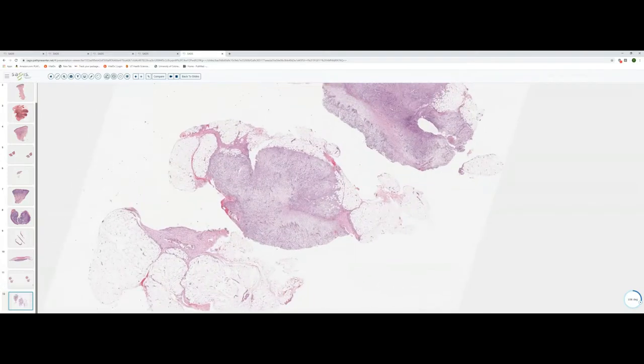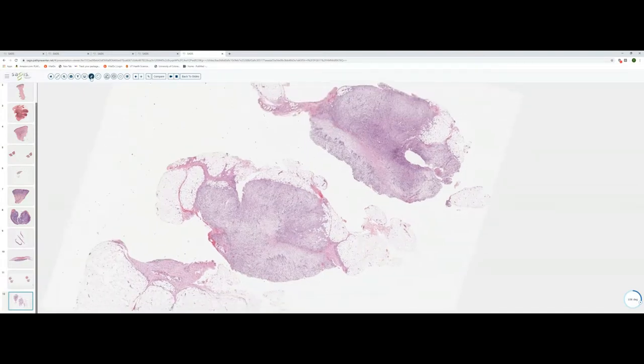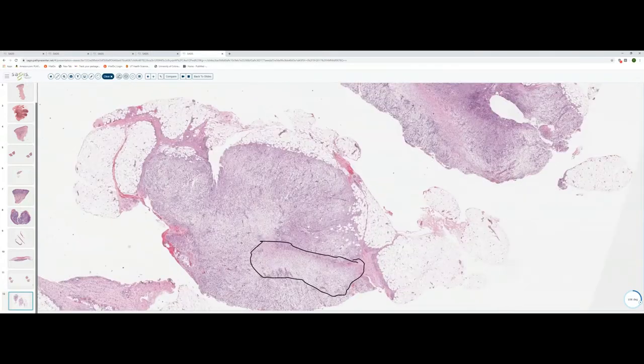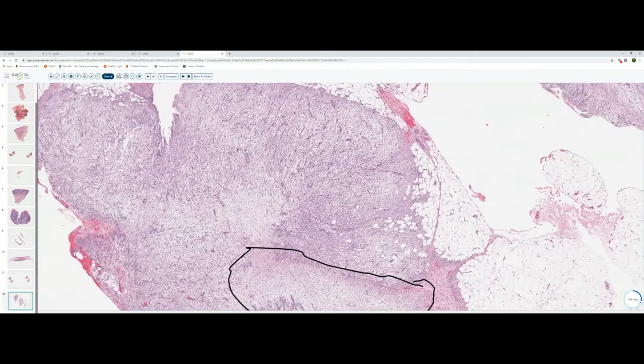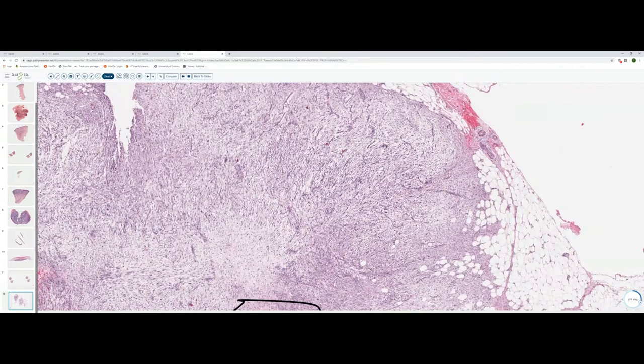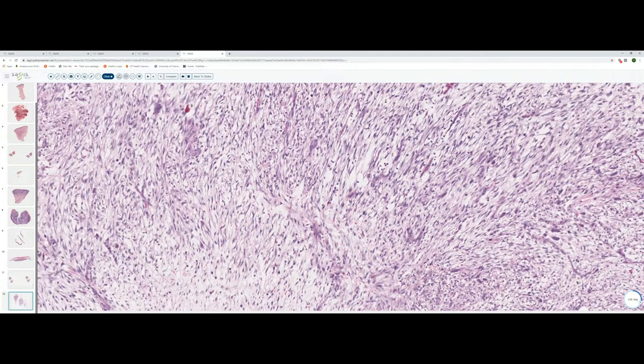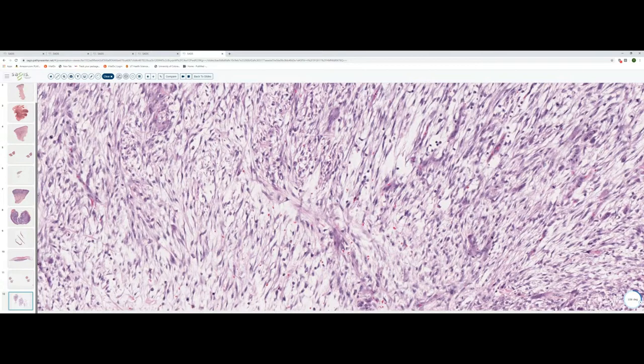And one can appreciate even at scanning magnification, there are both hypo and hypercellular areas. And then if we move to higher power, we can see embedded within an extremely myxoid stroma, a proliferation of uniform spindle cells. Now, some of these are kind of plump and stellate with prominent nuclei. There are a few mitotic figures, but they're normal in appearance.